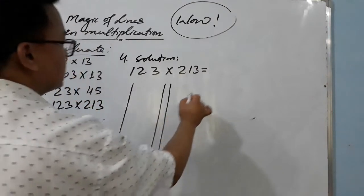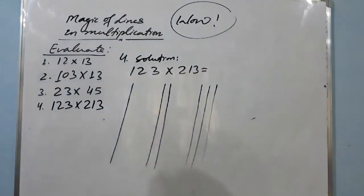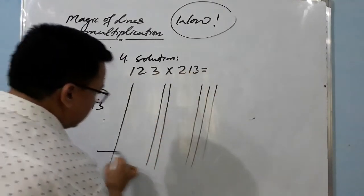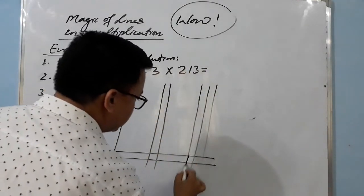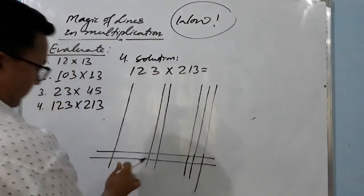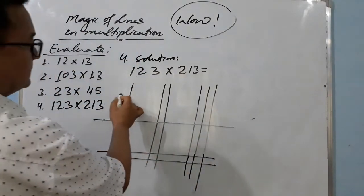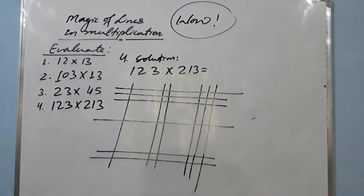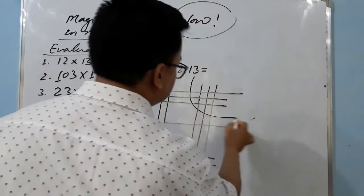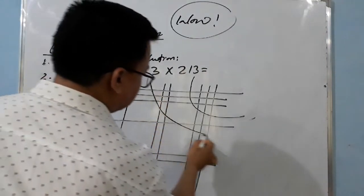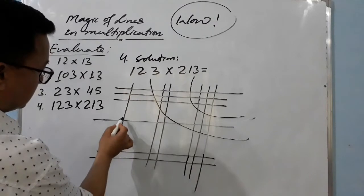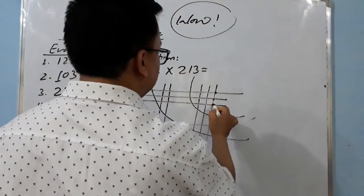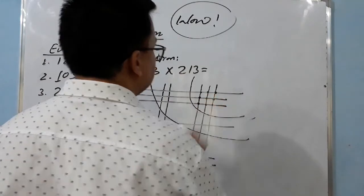Start drawing the lines: one line for '1', then two lines for '2', then three lines for '3'. Now for the second number, 213: draw two lines for '2', then one line for '1', then three lines for '3'. Now count the points of intersection. In the first section: one, two, three, four, five, six, seven, eight, nine — nine.